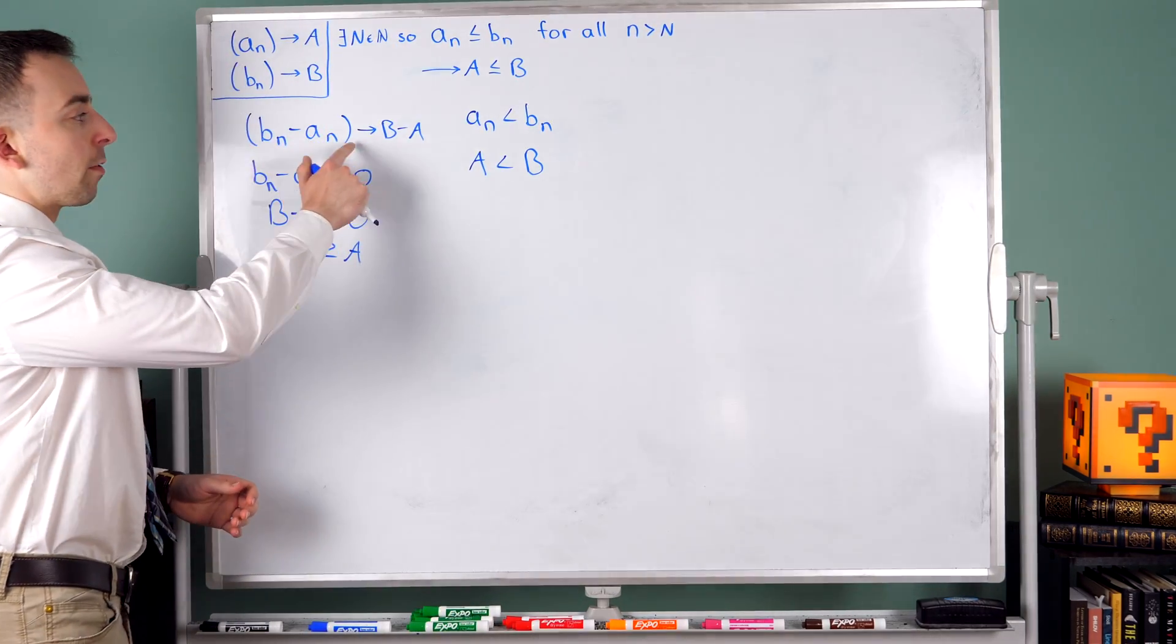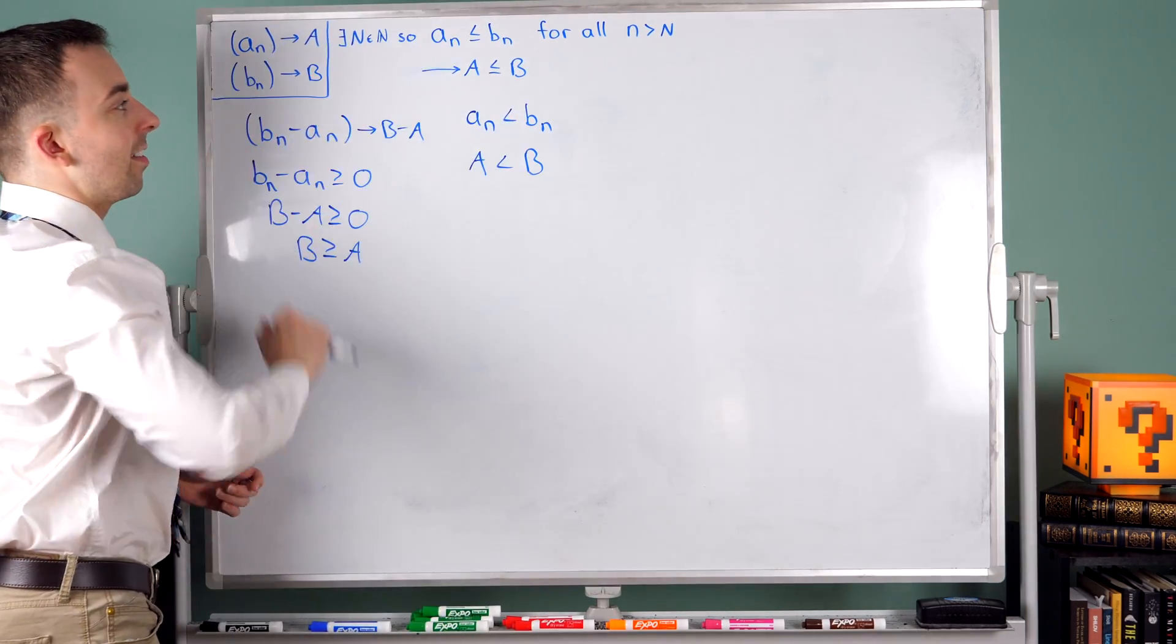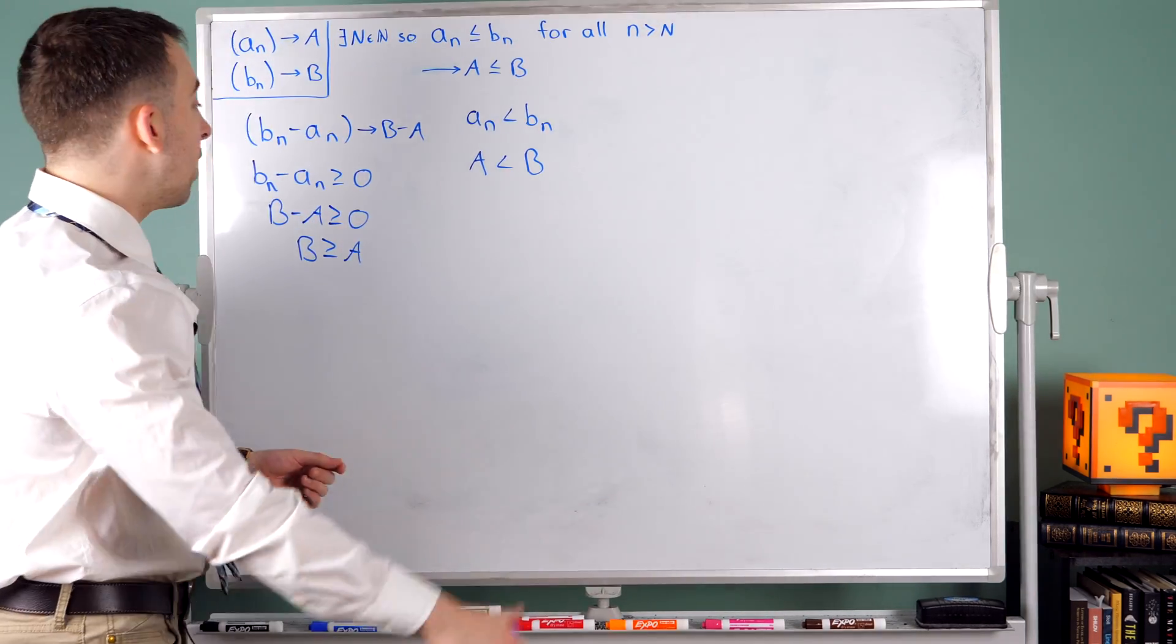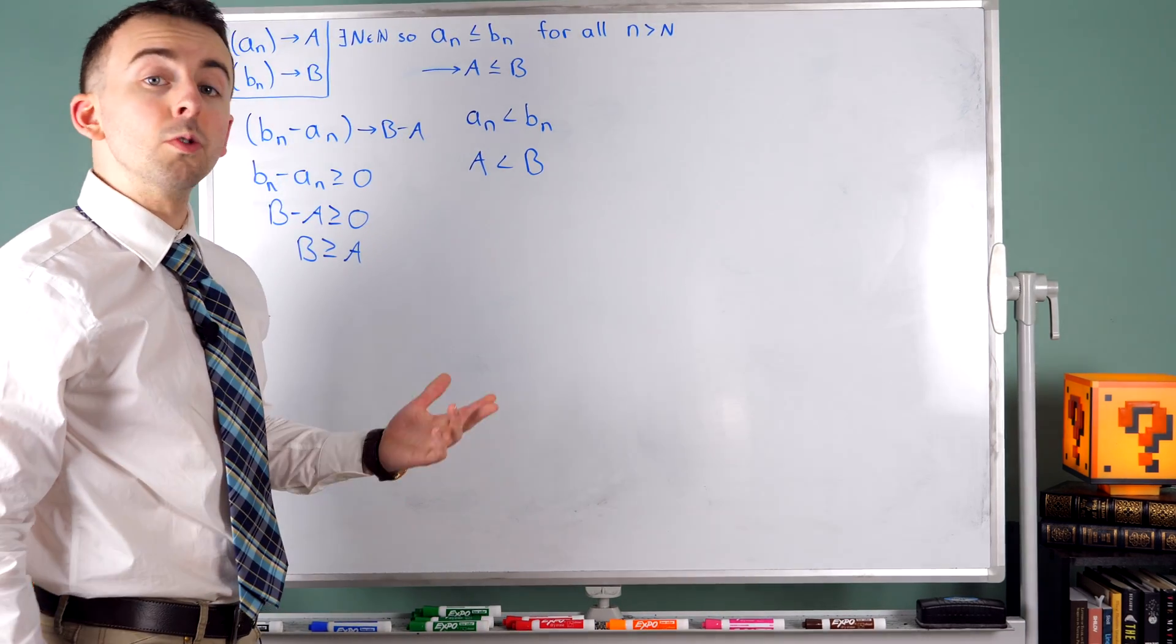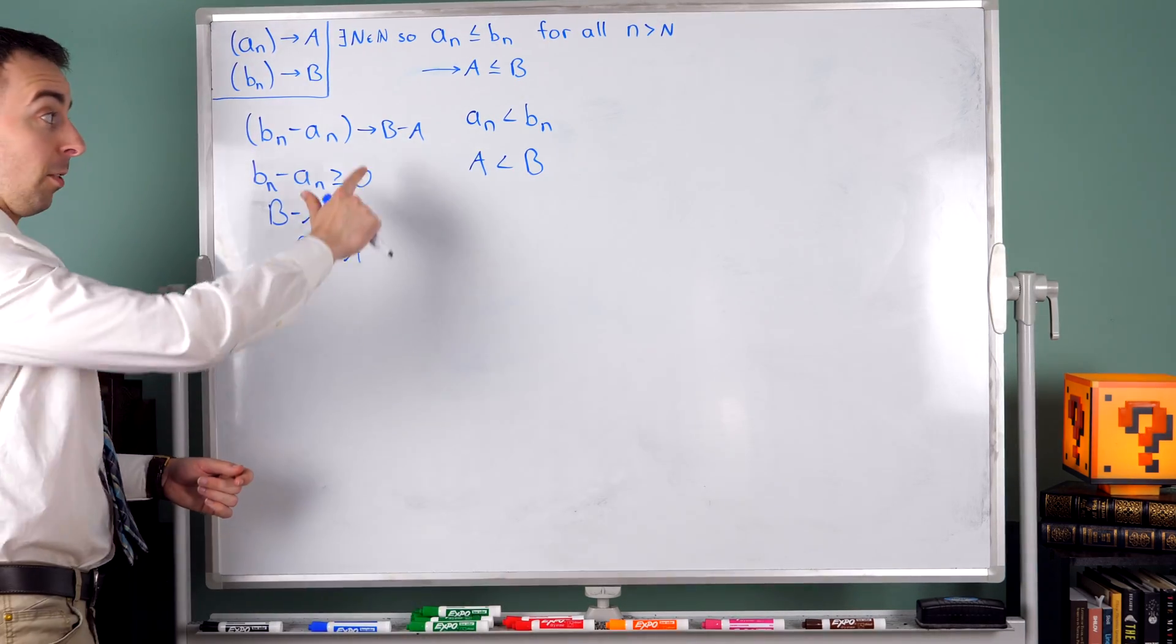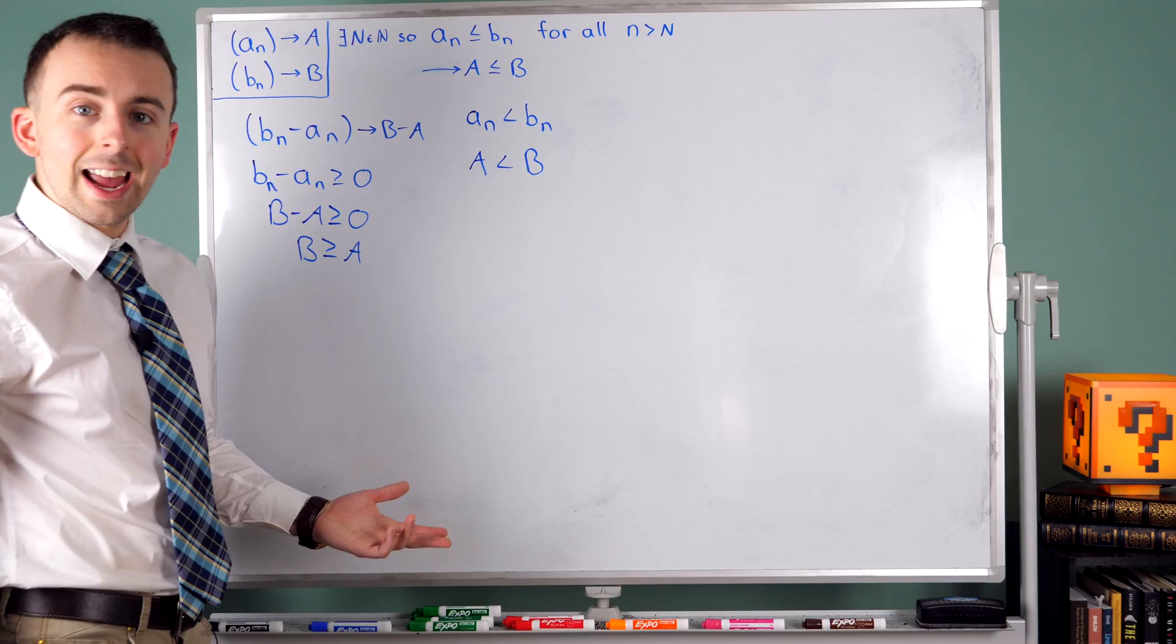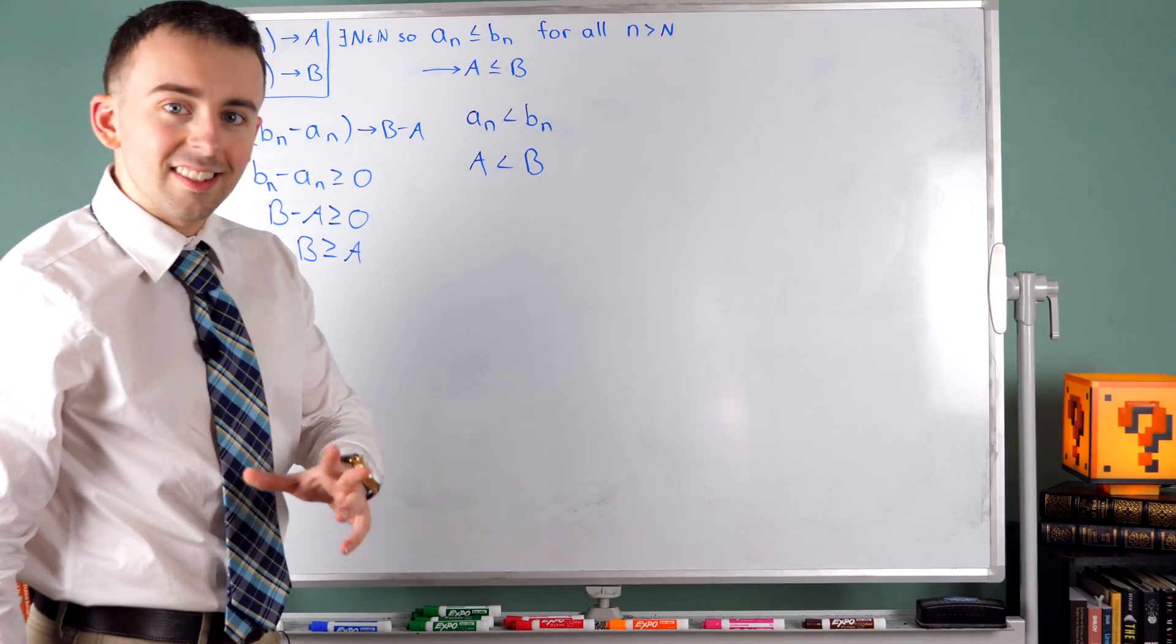So that means that B minus A must be non-negative as well, which immediately implies that B is greater than or equal to A or A is less than or equal to B. So again, the sequence of their differences converges to the difference of their limits. But since An is less than or equal to Bn, we know that every term of that sequence of differences is greater than or equal to zero. So its limit must also be greater than or equal to zero. Its limit is B minus A. And that being at least zero implies that B is at least A.